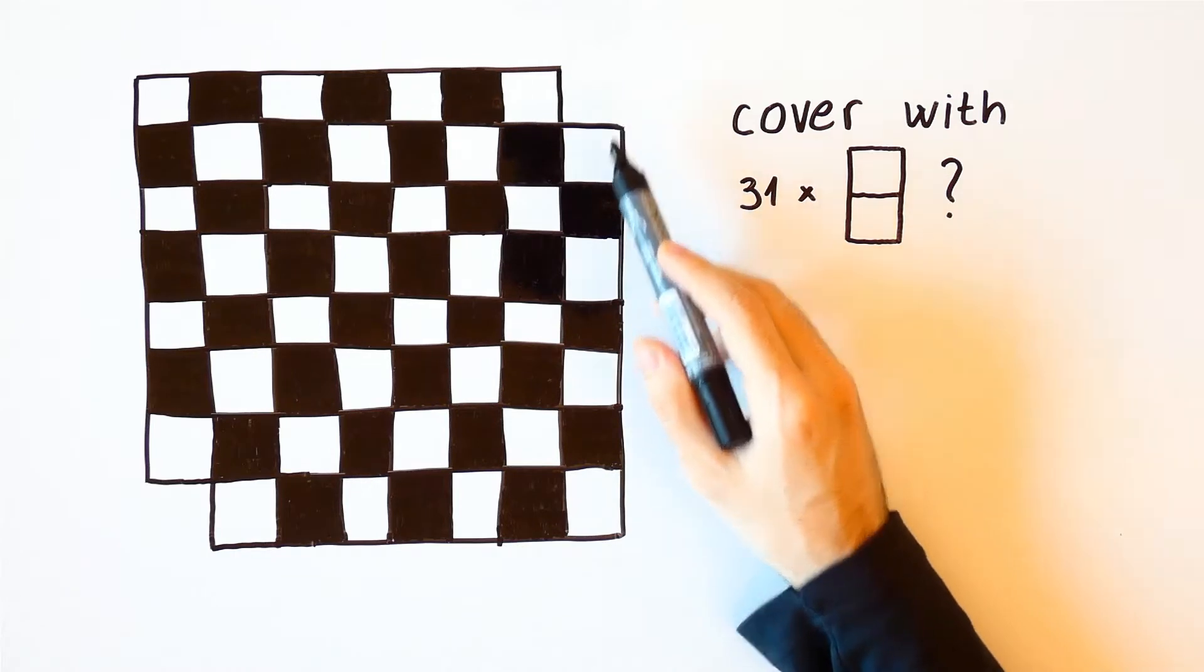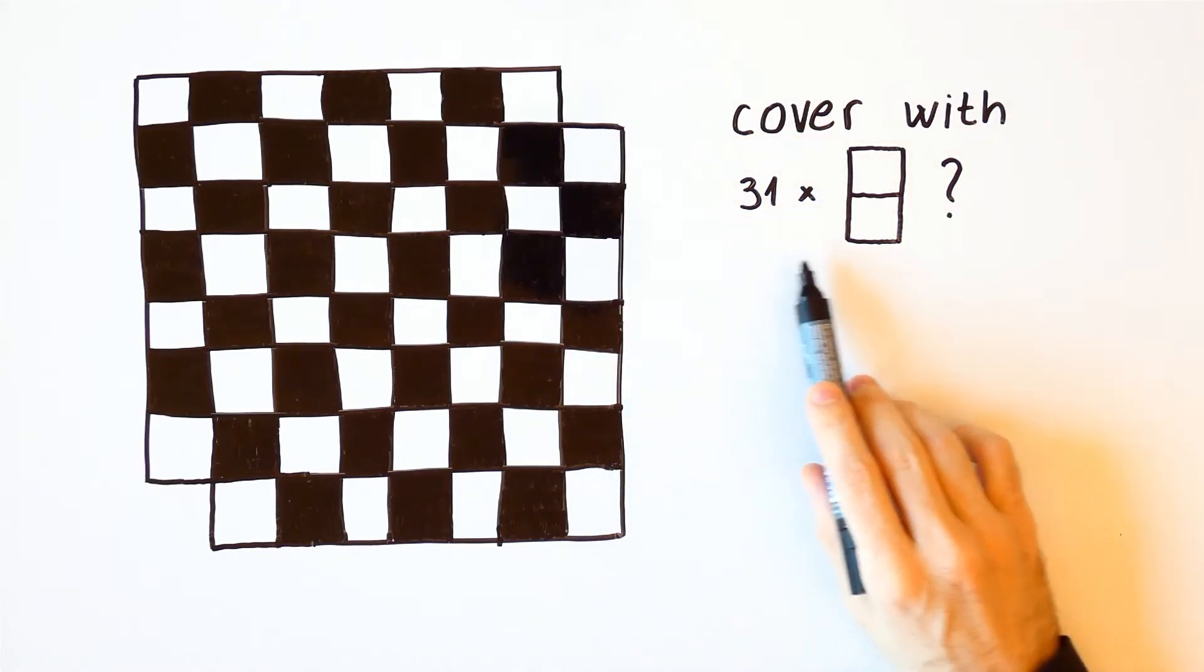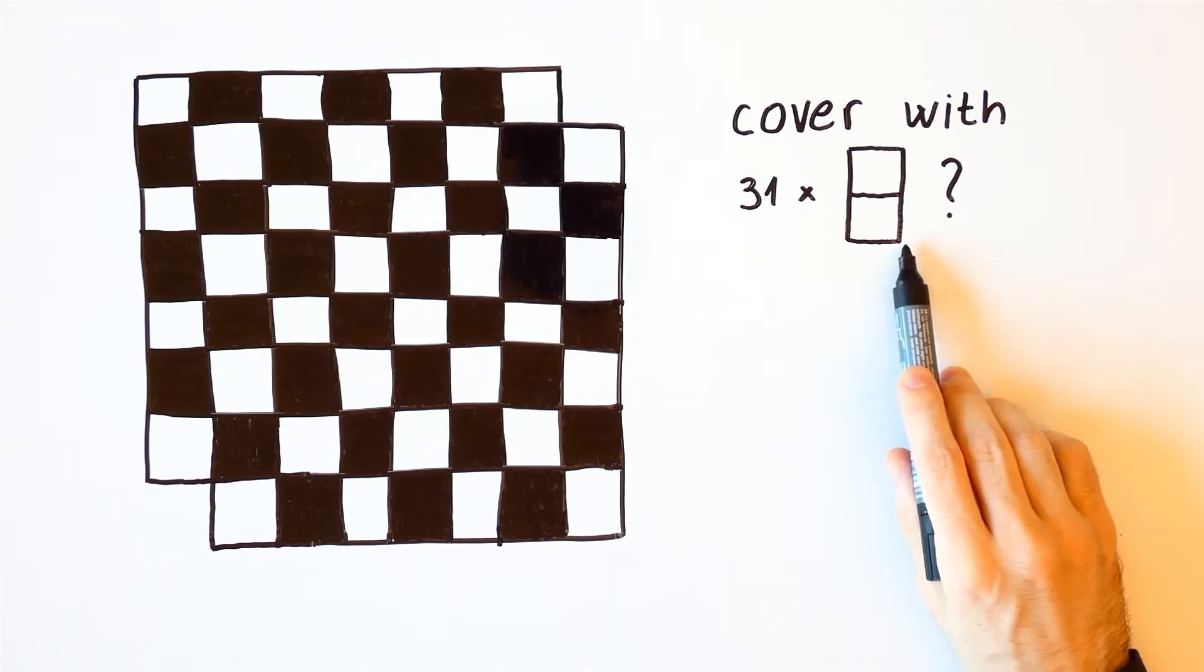Suppose two opposite corners of a standard 8x8 chessboard are removed. Can we cover the remaining chessboard with 31 2x1 dominoes?